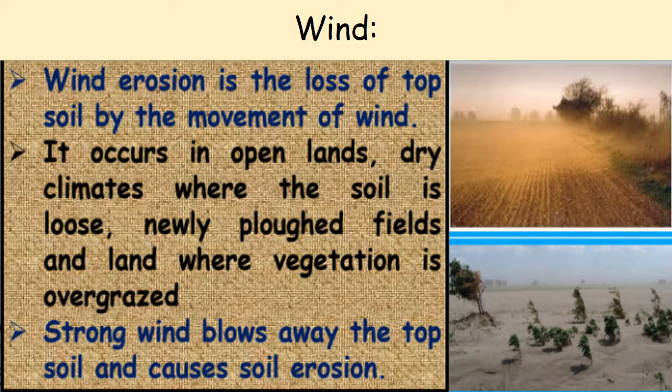Wind. Wind erosion is the loss of topsoil by the movement of wind. It occurs in open lands, dry climates where the soil is loose, newly plowed fields and land where vegetation is overgrazed. Strong winds blow away the topsoil and cause soil erosion.